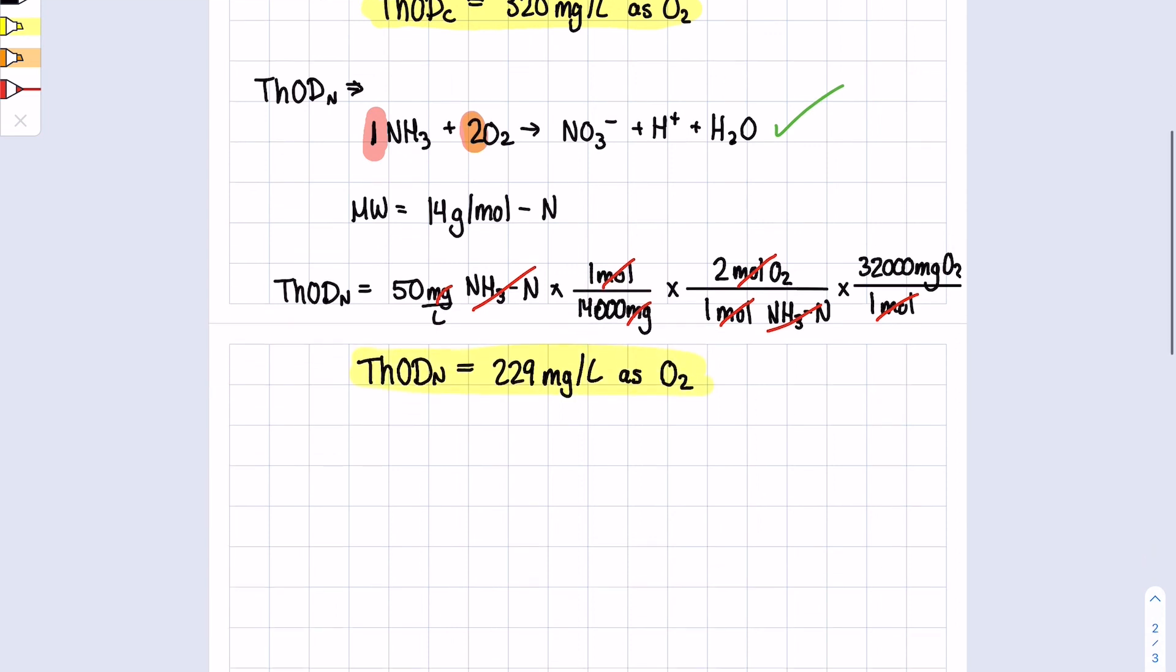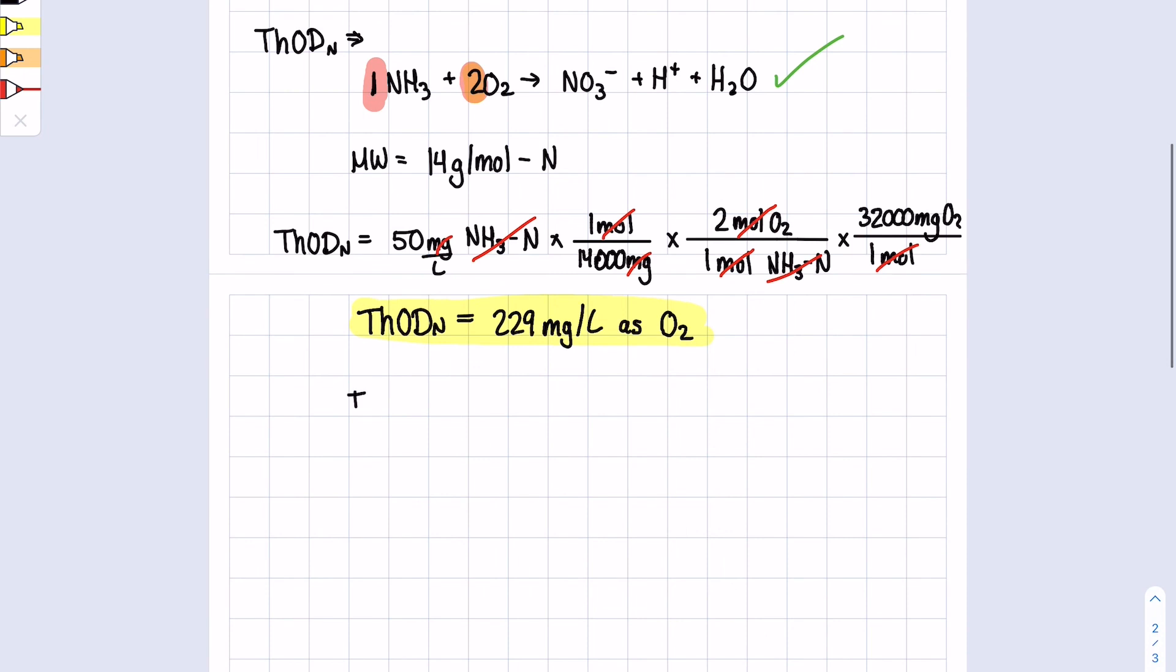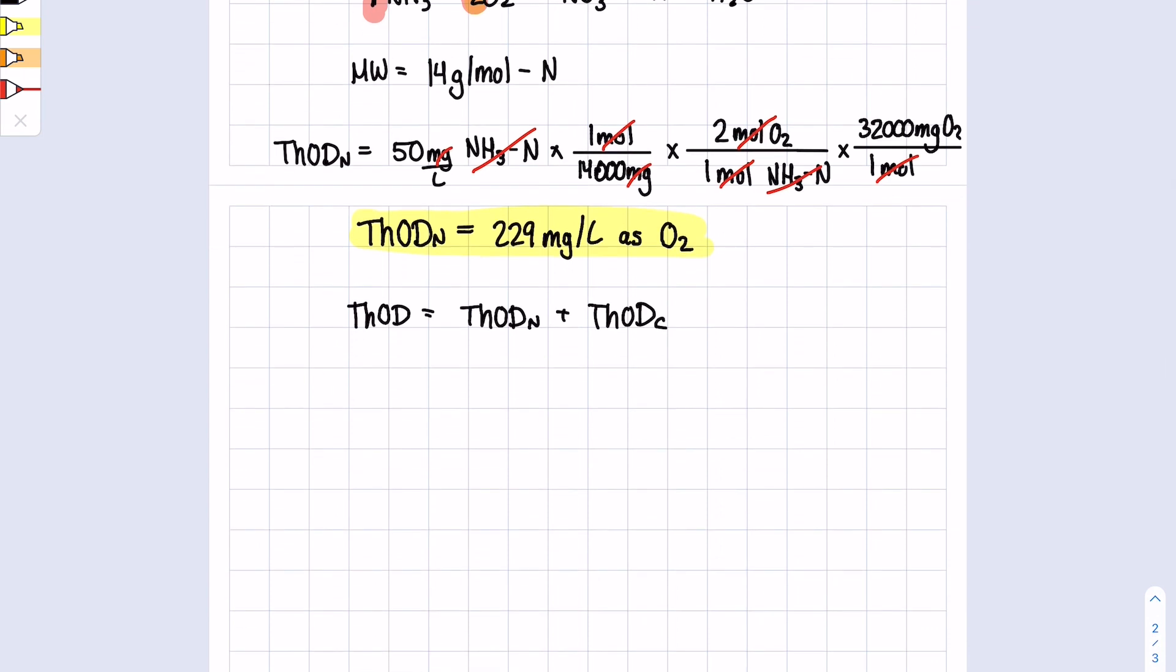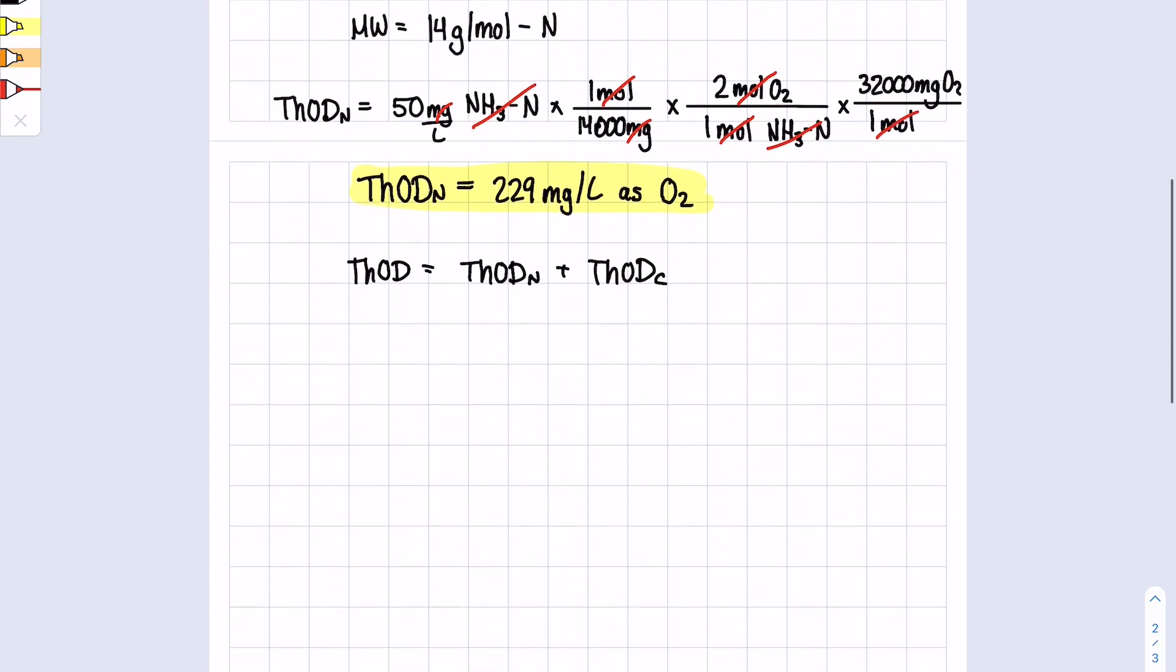Now finally, total ThOD is simple because it equals ThODn plus ThODc. You guys could probably have guessed that. So to get our total ThOD, we will use our values.